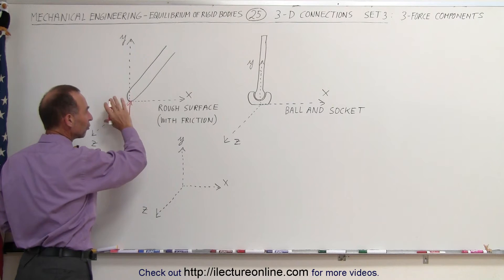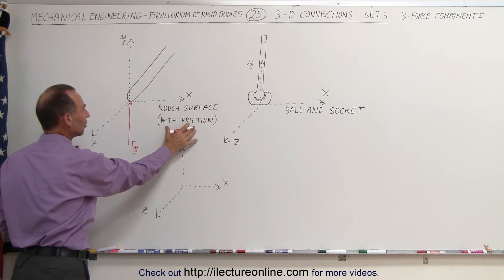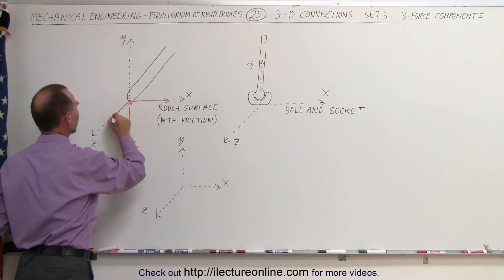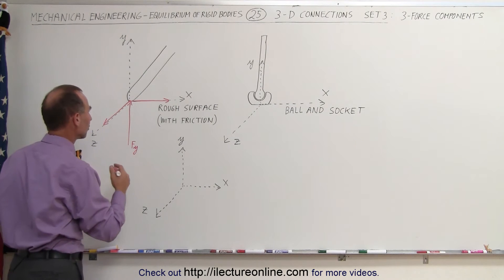Since the surface is not frictionless, there is friction there. We have potentially a force in the X direction and we have potentially force in the Z direction as well. So there's three force components.